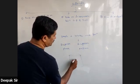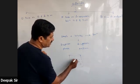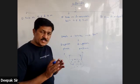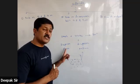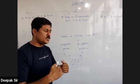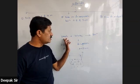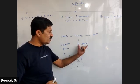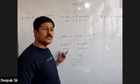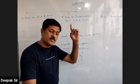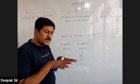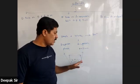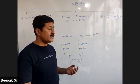The substance which disperses into another substance is called the disperse phase, and the substance in which another substance gets dispersed is called the dispersion medium. In normal language, we might say solute and solvent, but from the colloids point of view, the correct terminology is disperse phase and dispersion medium.